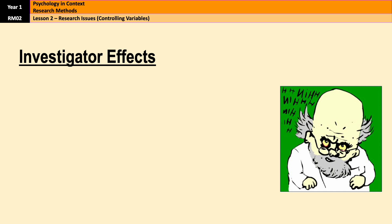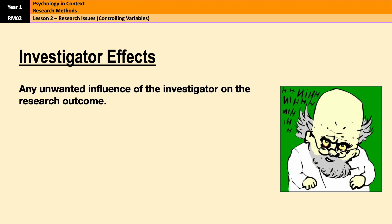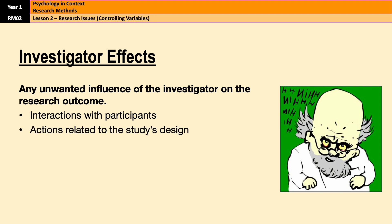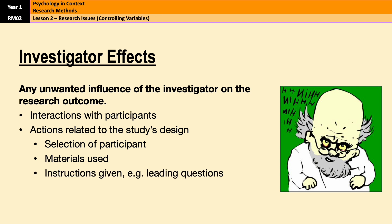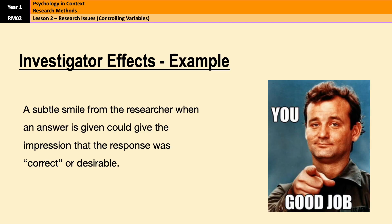Our final problem is investigator effects. These happen when the researcher unintentionally influences the outcome of the study, often by interacting with participants in ways that affect their behaviour, but also through actions related to the design of the study such as participant selection. As with the other factors discussed, investigator effects introduce bias and can obscure the role of the IV on the DV. For example, if a researcher subtly nods or smiles when a participant answers in a particular way, it could signal to the participant that they're giving the right response and encourage certain types of responses, influencing the results.